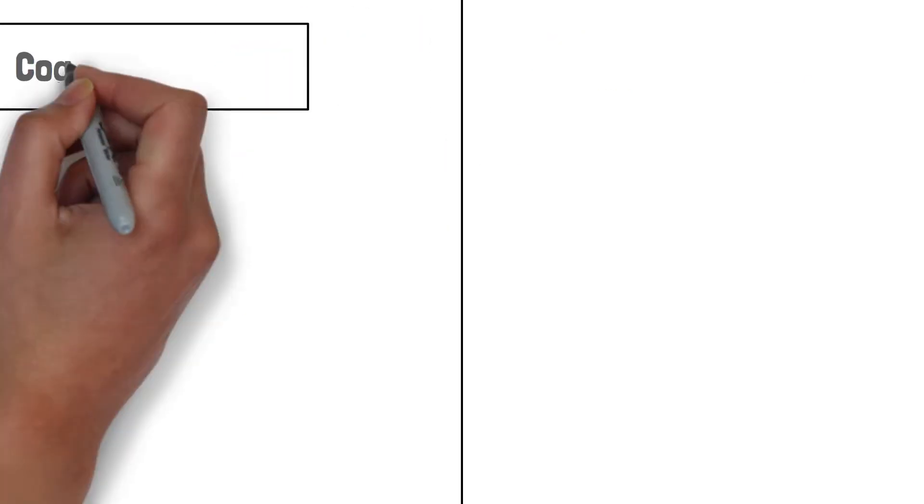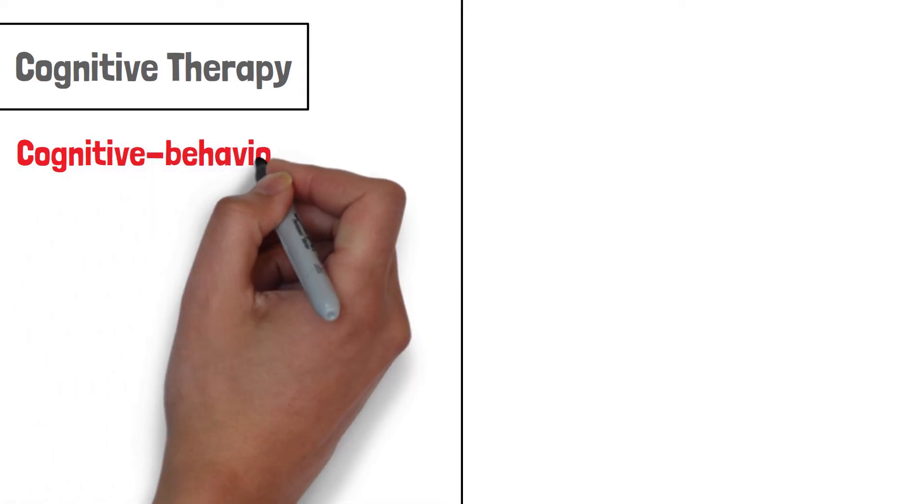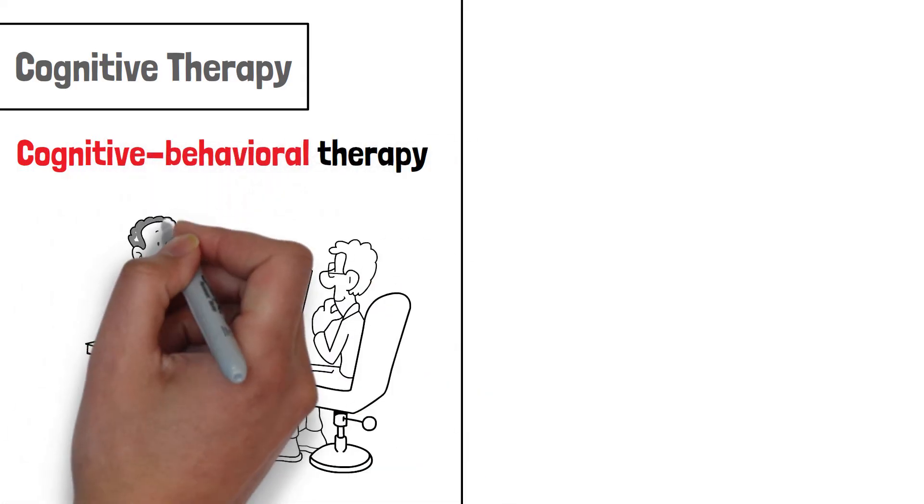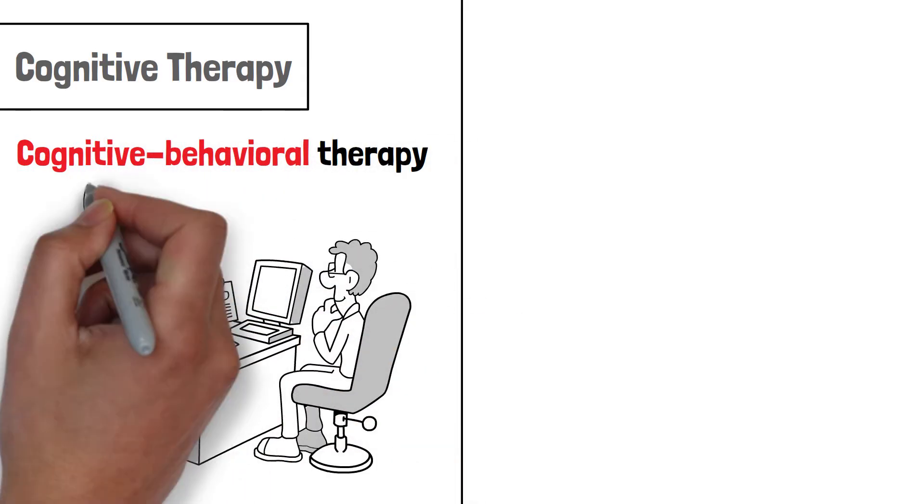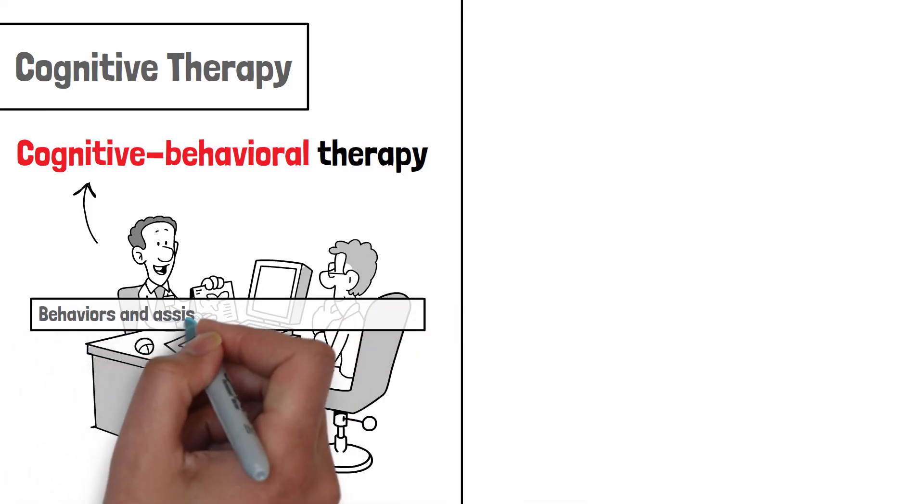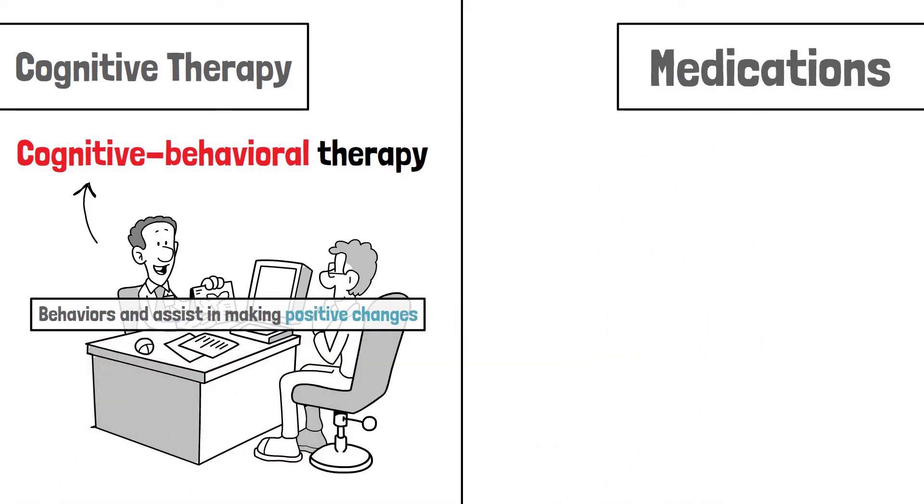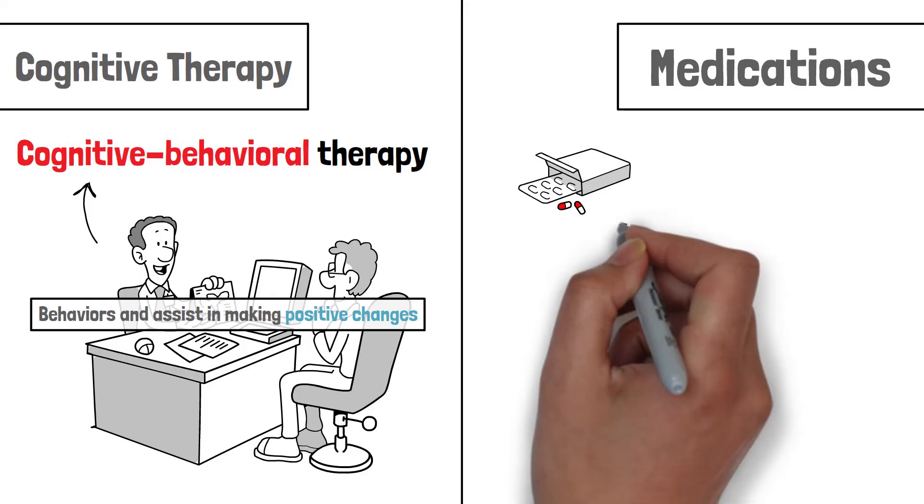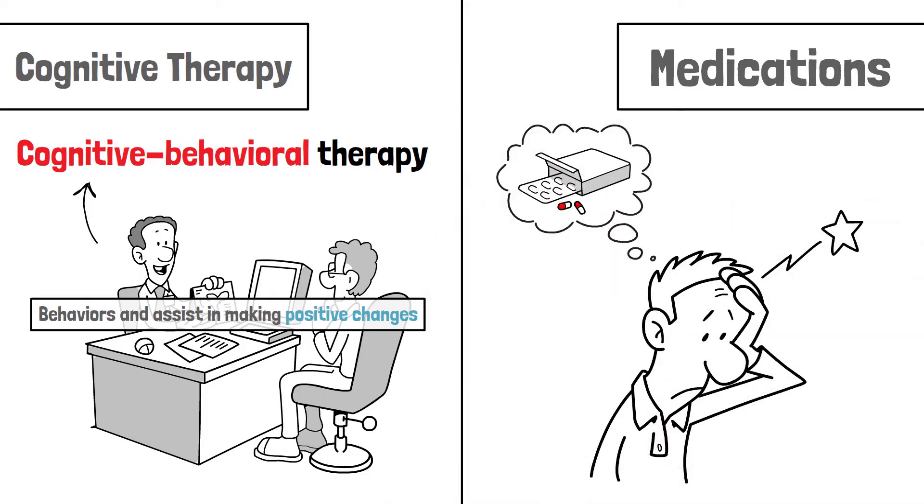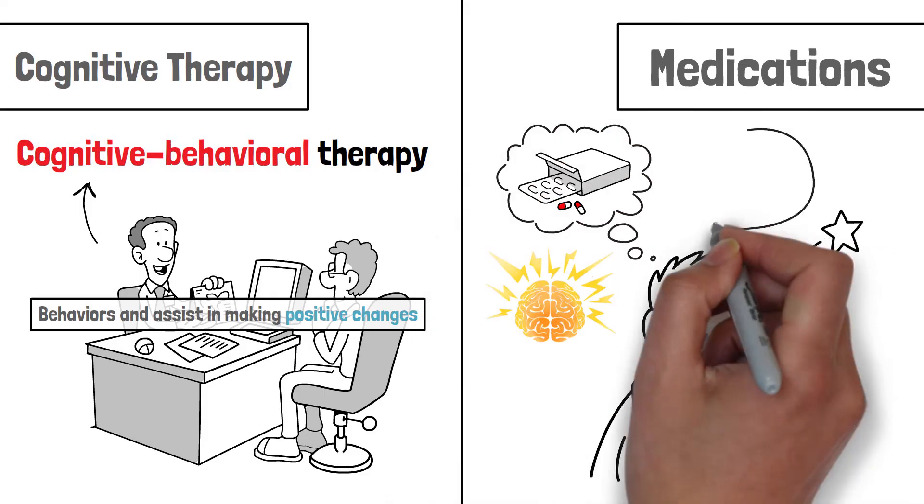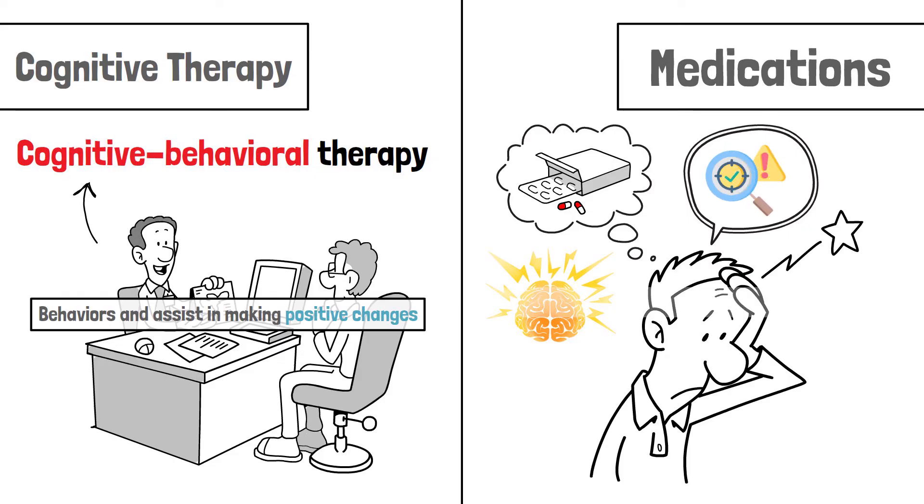Starting with cognitive therapy, cognitive behavioral therapy, or other mental therapies help individuals understand their behaviors and assist in making positive changes. Medications. There are medications that can improve cognitive functions and reduce symptoms such as memory loss, confusion, or problem-solving issues. There are specific medications available for disorders like Alzheimer's disease.